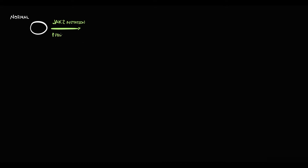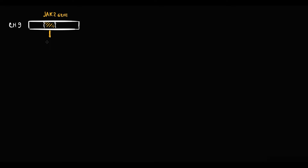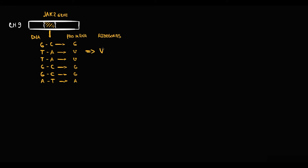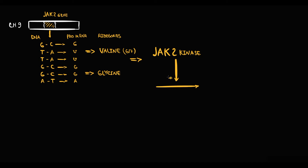The most important mutation that triggers polycythemia is a mutation that causes formation of pathological JAK kinase, that markedly increases the production of myeloid cells. Recall that on chromosome 9 is located the JAK2 gene that encodes JAK kinase. The function of JAK kinase is to activate cellular pathways that are responsible for cellular proliferation, mostly of myeloid cells, and activation of these pathways occurs by phosphorylation.